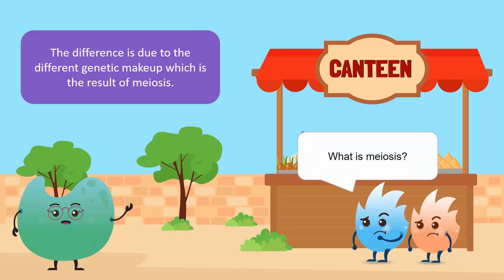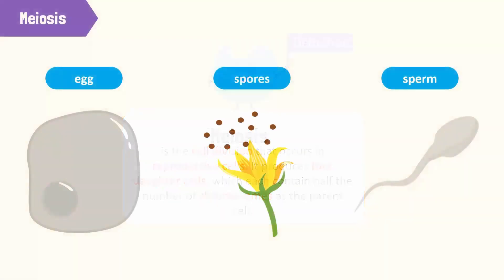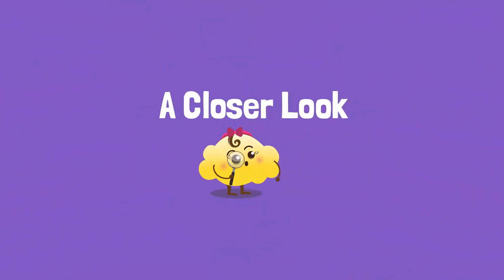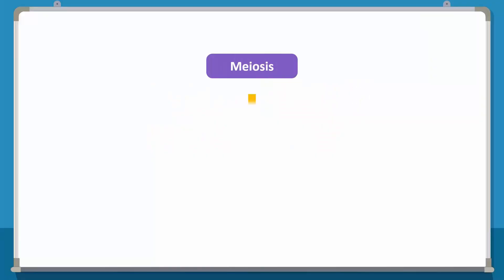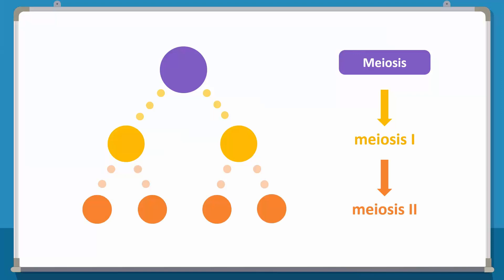What is meiosis? Meiosis is a type of cell division that occurs in reproductive cells and results in four daughter cells, each with half the number of chromosomes as the parent cell. For example, the production of eggs and sperm cells in humans and spores in plants. Let's take a closer look at all the steps of meiosis. Meiosis is divided into meiosis I and meiosis II. Meiosis I results in two unique daughter cells, whereas meiosis II produces four unique cells that only have half the number of chromosomes as the parent cell. Each of these divisions are further divided into four phases.